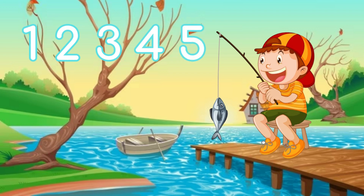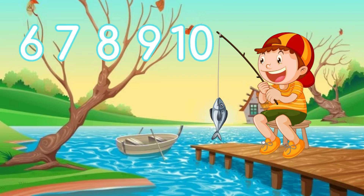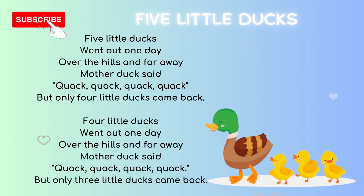Shall we sing again? Join with me, children! One, two, three, four, five — once I caught a fish alive. Six, seven, eight, nine, ten — then I let it go again. Why did you let it go? Because it bit my finger so. Which finger did it bite? This little finger on my right. Next rhyme is Five Little Ducks — sing along with me!